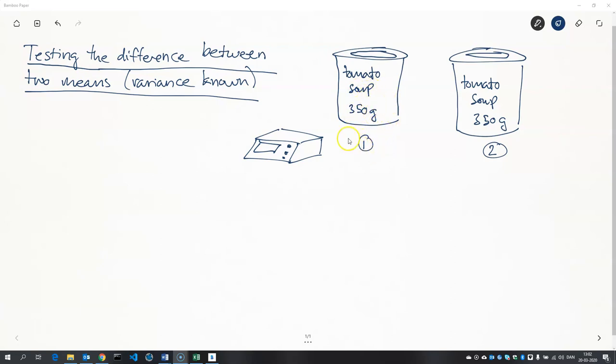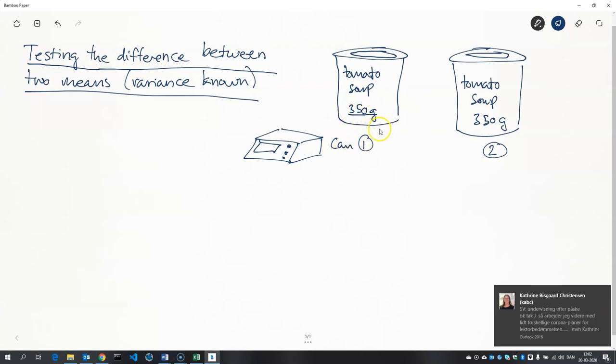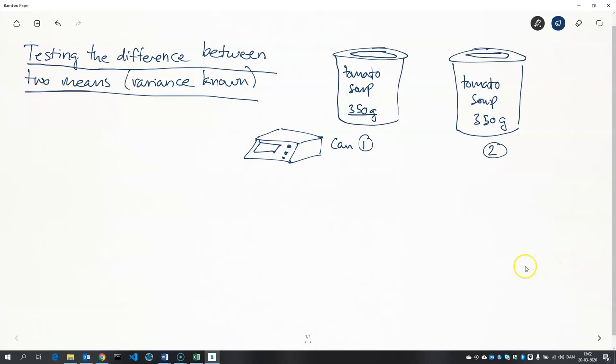I'll call it can one. It's supposed to weigh 350 grams. And also we have a can two. It's also supposed to weigh 350 grams.